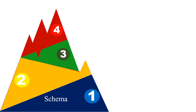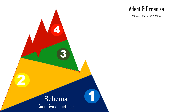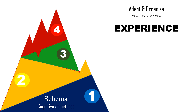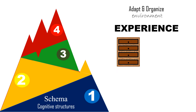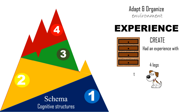Piaget used the term schema to refer to the cognitive structures by which individuals intellectually adapt to and organize their environment. It is an individual's way to understand or create meaning about a thing or experience. It is like the mind has a filing cabinet, and each drawer has folders that contain files of things he has had an experience with. For instance, if a child sees a dog for the first time, he creates his own schema of what a dog is — it has four legs and a tail.